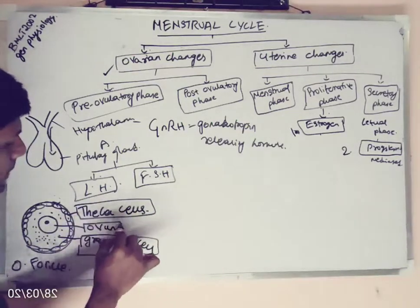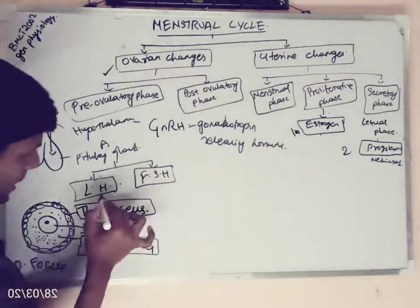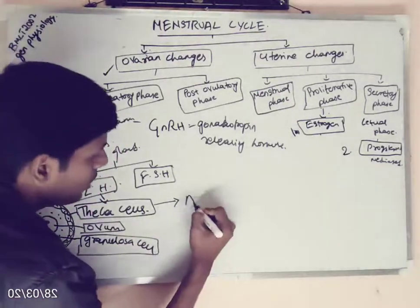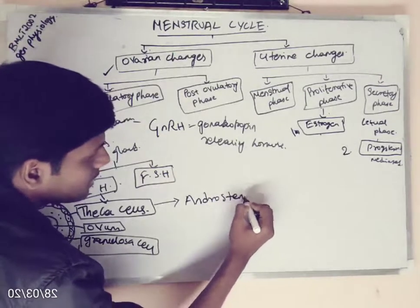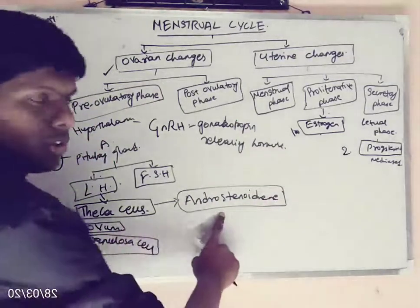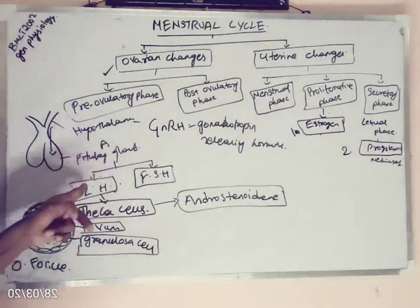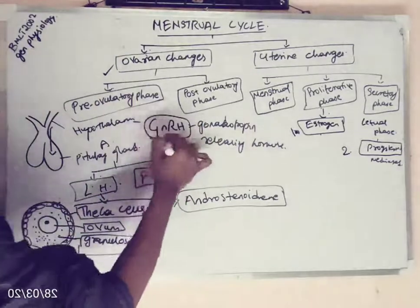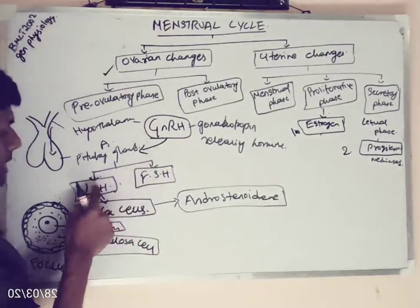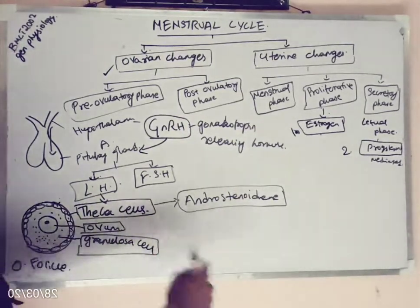Let us focus on the theca cells. In the presence of luteinizing hormone, the theca cells will produce a substance called androstenedione. So, theca cells of the ovarian follicle will secrete androstenedione in the presence of luteinizing hormone, which is secreted by the anterior pituitary gland. The anterior pituitary gland secretes luteinizing hormone with the help of gonadotropin-releasing hormone. This luteinizing hormone will act on the theca cells, and these theca cells will produce androstenedione.